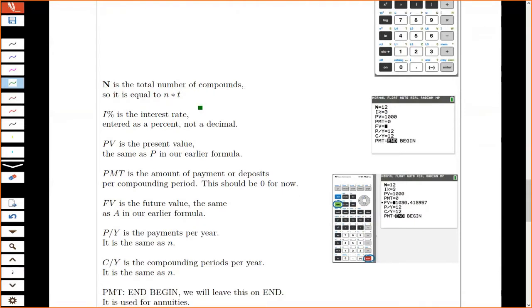We'll go through an example in a second. The other big difference is that the interest rate, it says I percent, it's actually asking you to enter it as a percent, not as a decimal. So if it's 3%, you would leave it as 3 and not put in 0.03.